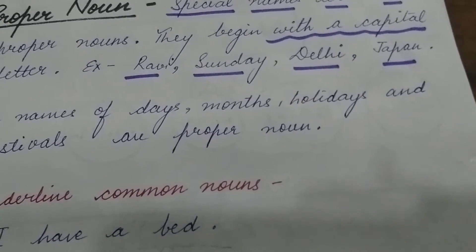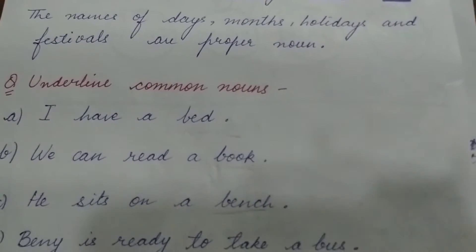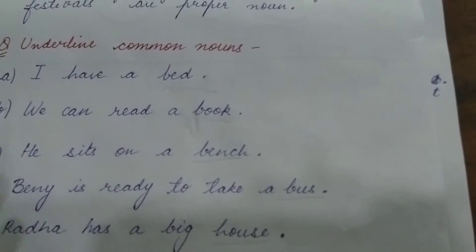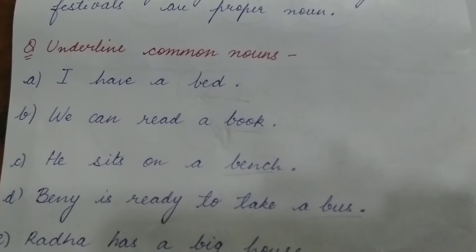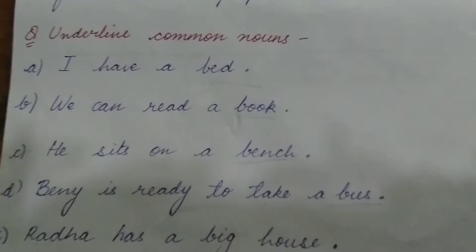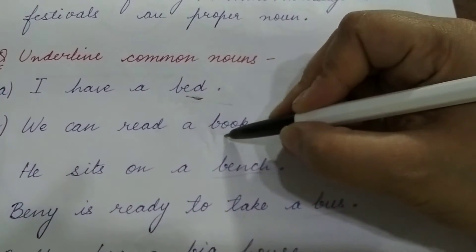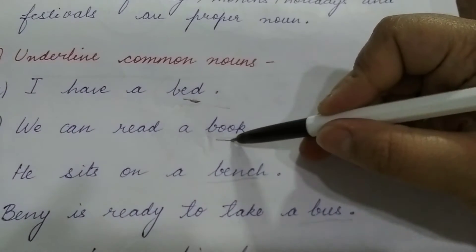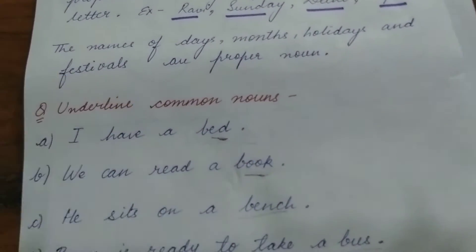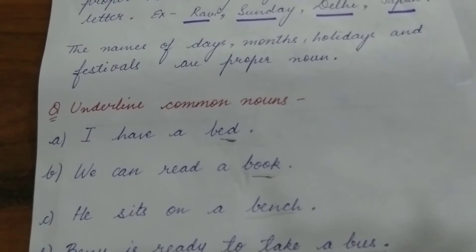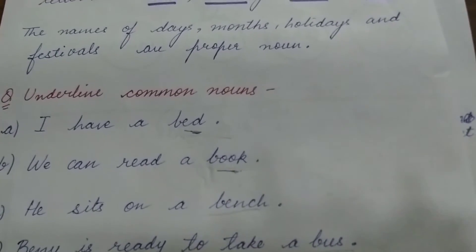So there are few questions we will solve based on common and proper noun — underline the common noun. 'I have a bed.' Bed is a common noun; it is a thing and a general name. 'We can read a book.' Book is a common noun because it is not a specific book. If instead of book you wrote Ramayana or Gita, that would be a proper noun. But only 'book' is written here, so book is a common noun.